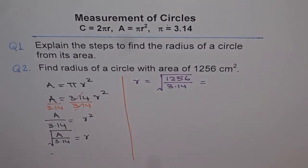So let's say square root within brackets 1256 divided by 3.14, bracket close, equals to 20.